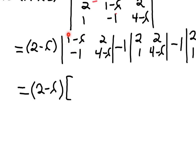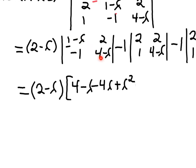I'm going to FOIL (1 minus lambda) times (4 minus lambda). First: 1 times 4 gives 4. Outside: 1 times negative lambda gives negative lambda. Inside: negative lambda times 4 gives minus 4 lambda. Last: negative lambda times negative lambda gives positive lambda squared. And then we subtract the off-diagonal product: minus negative 2, so plus 2. So the determinant of that first 2 by 2 is lambda squared minus 5 lambda plus 6.